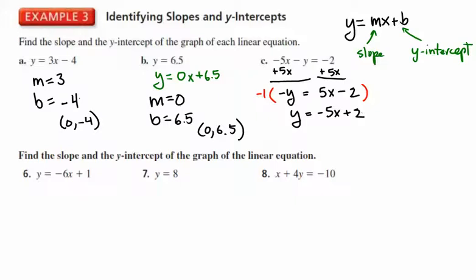Now my equation is in y equals mx plus b form. I can easily see that the slope is negative 5 and the y-intercept is positive 2, or the point (0, 2).